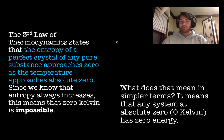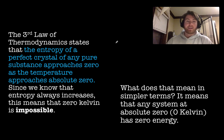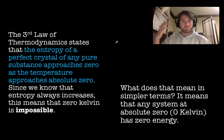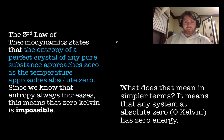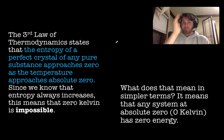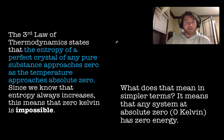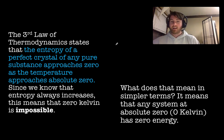The third law states that the entropy of a perfect crystal of any pure substance approaches zero as that object approaches absolute zero — zero Kelvin. At absolute zero, you'd have perfectly ordered crystalline structure with zero movement and zero randomness. But this tells us that absolute zero is impossible — it's never possible to have a system with zero energy.